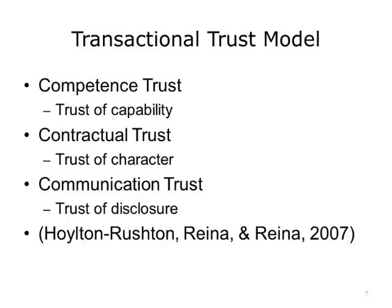These components include competence trust (trust of capability), communication trust (trust of disclosure), and contractual trust (trust of character). For each type of trust, the model specifies behaviors that are essential for building that trust and suggests ways to interact with patients and families. Transactional trust comprises competence trust, contractual trust, and communication trust. Competence trust is one of capability, contractual trust is one of character, and communication trust is one of disclosure.